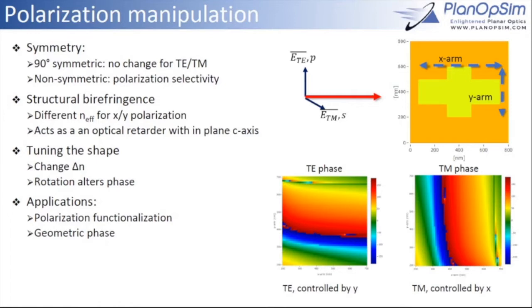First example, using this for polarization management, where instead of having a symmetric structure, we use a structure that's different in the horizontal direction to the vertical direction, it creates an effective difference for the two polarizations. To simulate that, we see that the one arm actually controls the TE phase, whereas the other arm only influences the TM phase. We can use this shape to control polarization in later applications.